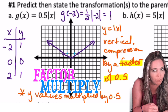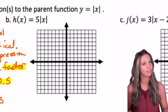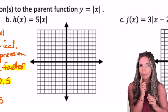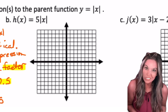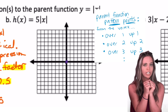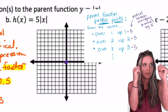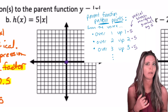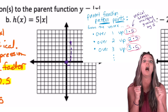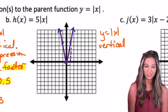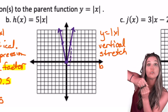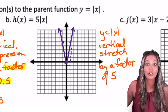Factor means multiply. If multiplying by 0.5 caused a vertical compression, what do you think is going to happen when we multiply by five instead? Let's try our pattern points. Original pattern points were vertex, over one, up one. But now we're multiplying those y values by five, so vertex, over one, up five. Now my graph is really, really skinny. We call this a vertical stretch by a factor of five.